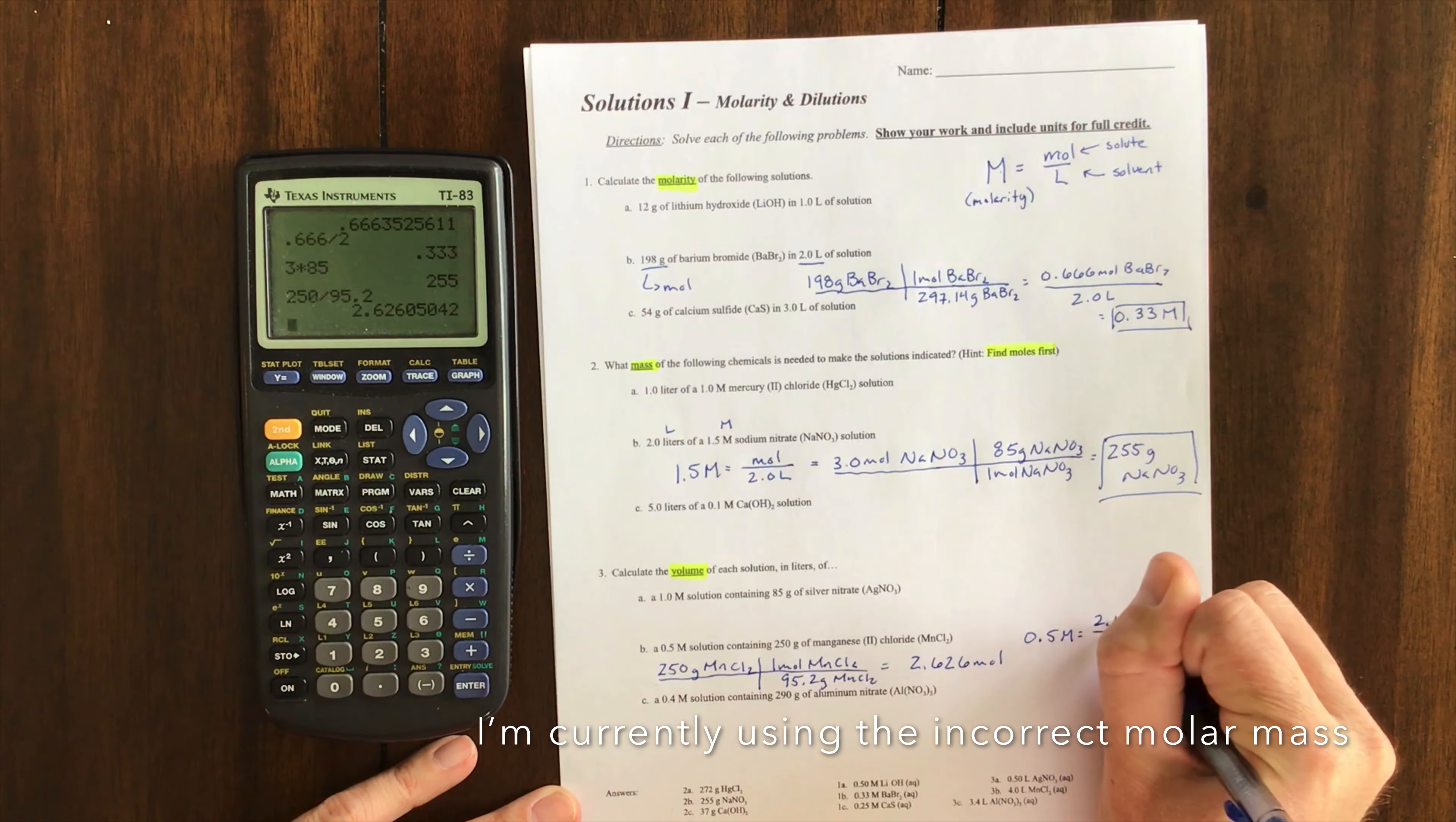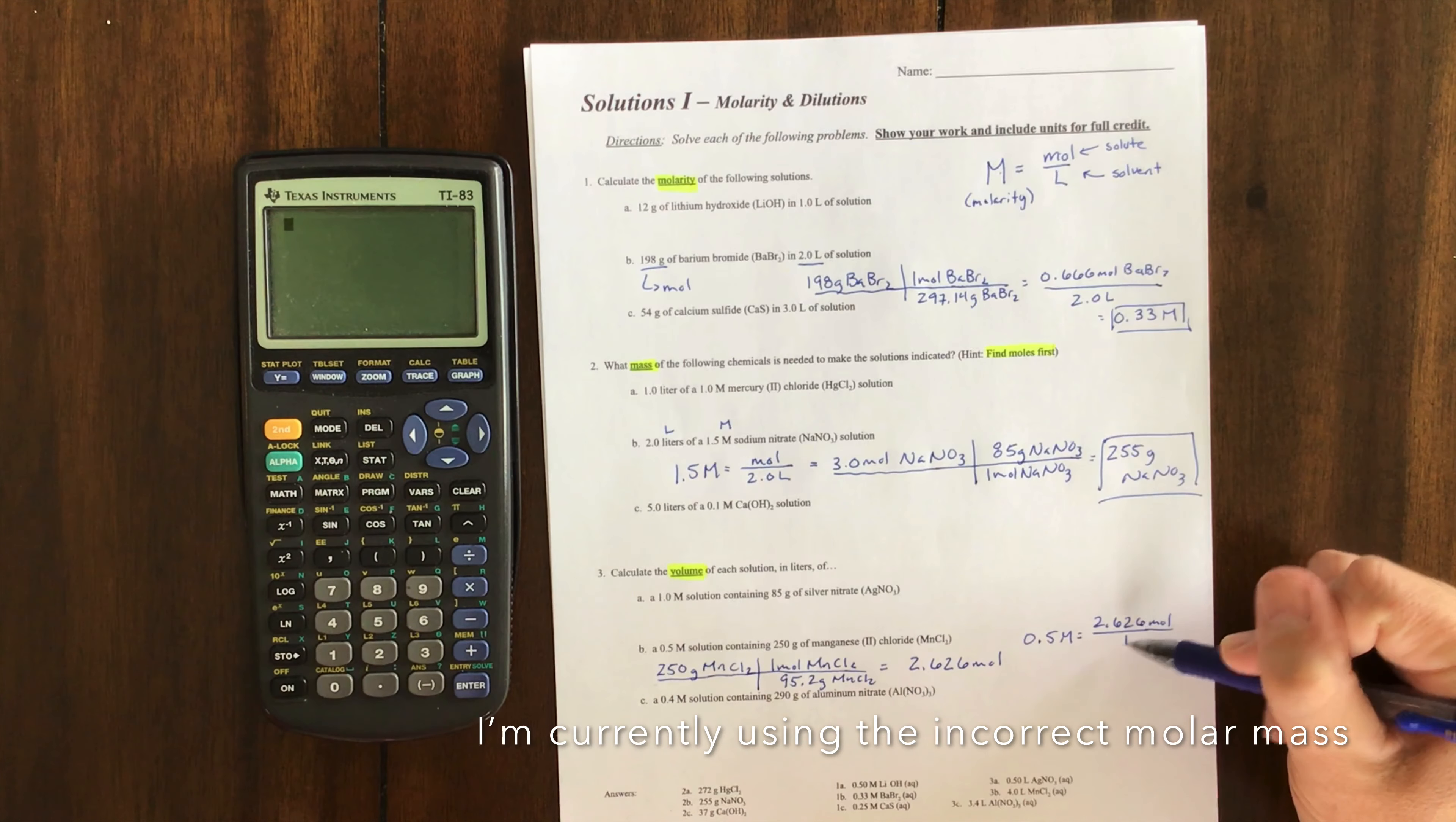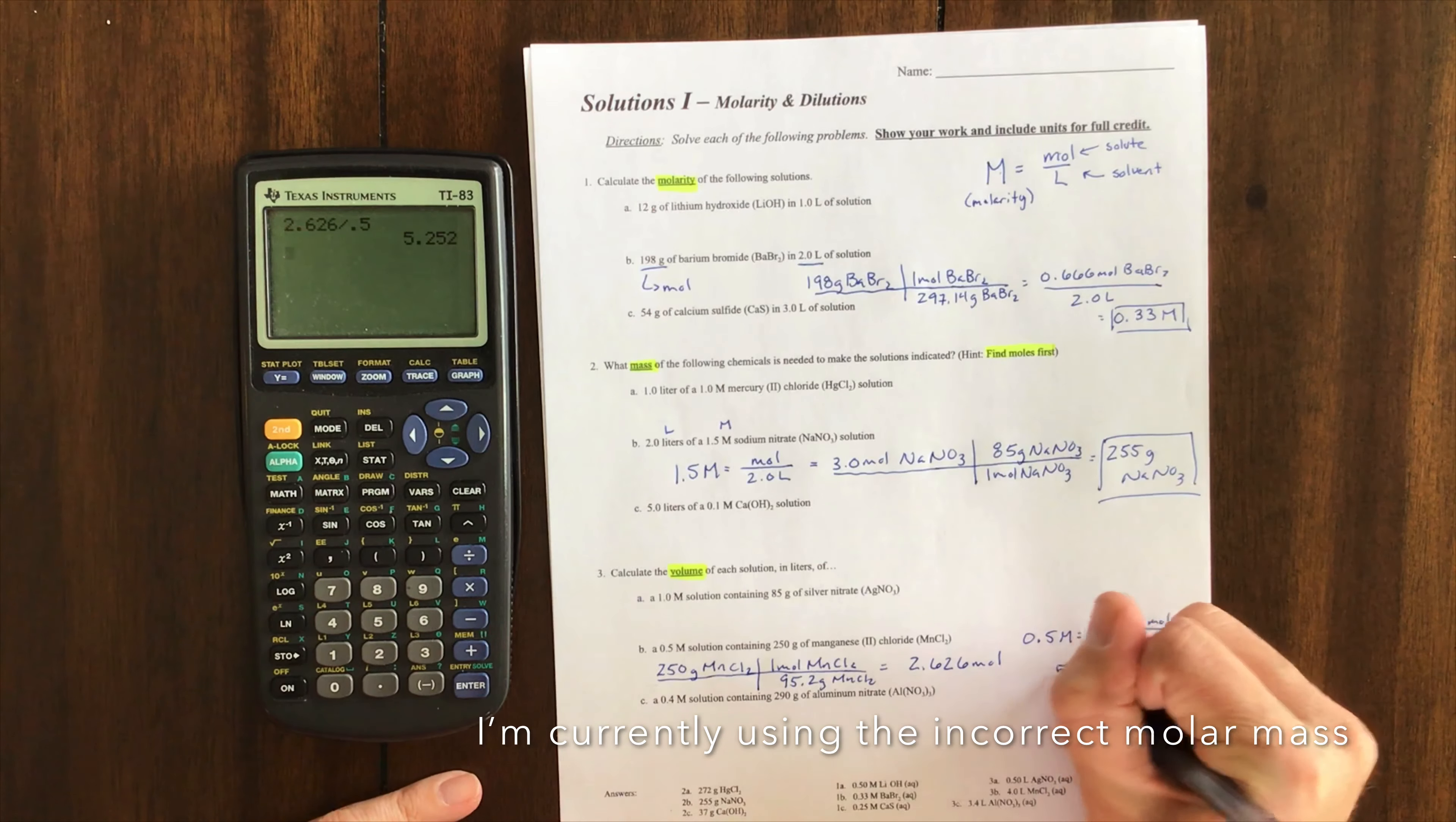How do I figure that out? You could do cross multiplication and division. If I rearrange that—it's just a little algebra—it's going to be 2.626 divided by 0.5 to get my answer.